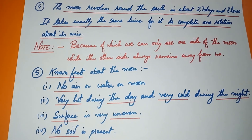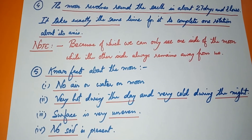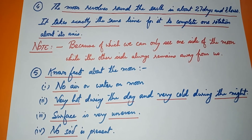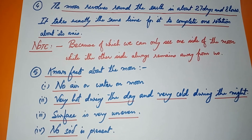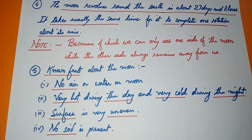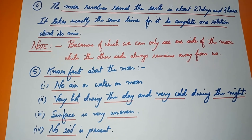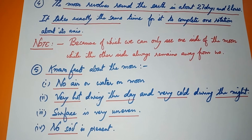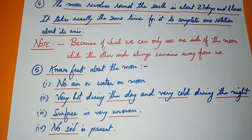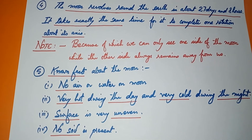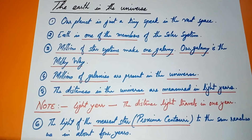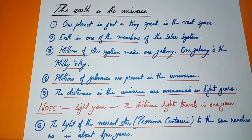Important known facts about the moon: on the moon, there is no air or water. It is very hot during the daytime and very cold at night. The surface is very uneven, and there is no soil present on the moon's surface.